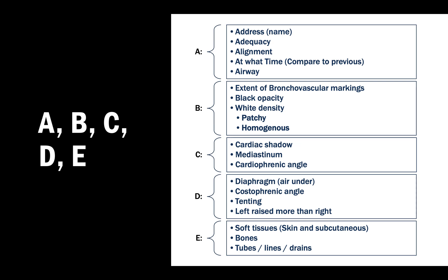C - have a look at the cardiac shadow and how big the heart is. Look at the cardiophrenic angle and the mediastinum - is it normal or widened? Widening might indicate injury to great vessels. Also check for any pneumomediastinum, which we sometimes see, so examine the mediastinum carefully.